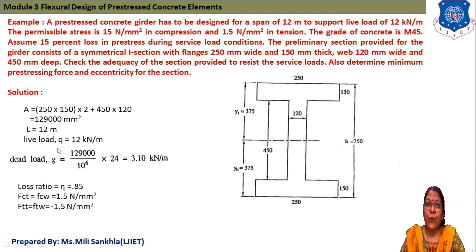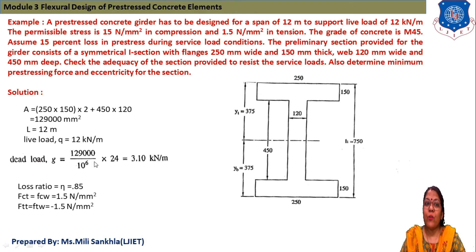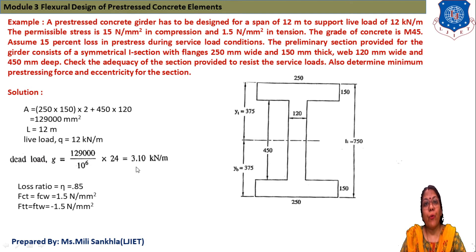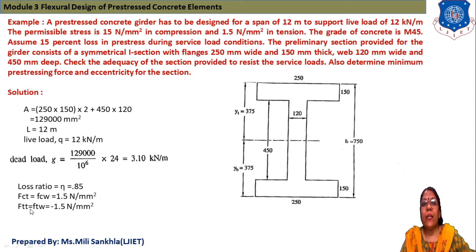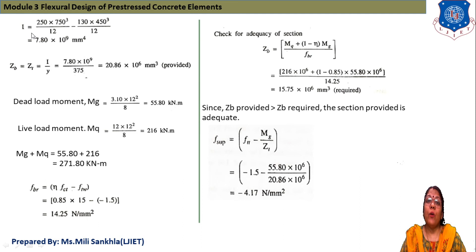L = 12 m, Q = 12 kN/m. Dead load G = area × density = 129,000 mm² × 24 kN/m³ / 10⁶ = 3.1 kN/m. Loss ratio η = 0.85. f_ct = 1.5 N/mm² (tension), f_tt = f_tw = −1.5 N/mm².